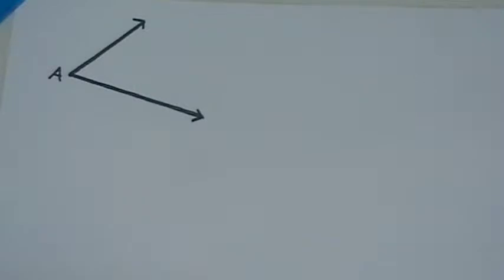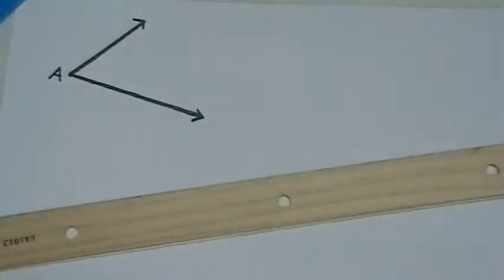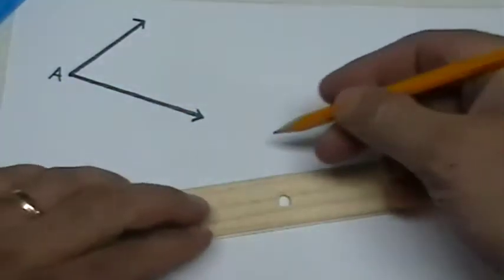In this video we are going to construct a congruent angle. We have an angle named A and we're going to start off by taking our straightedge tool and draw an initial ray for our angle.